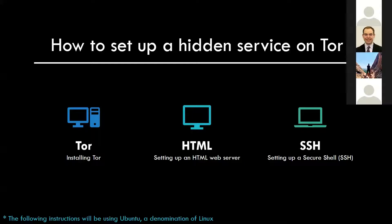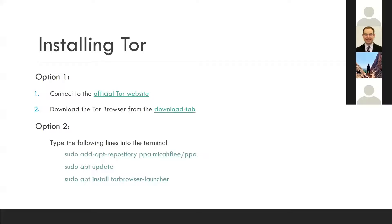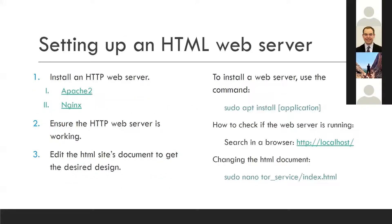Setting up a hidden service is done on Ubuntu Linux. First, install Tor — either from the website or via Linux commands by adding the repository and installing with superuser commands. Then set up an HTML web server using Apache2 or Nginx, which are downloadable HTTP web servers.